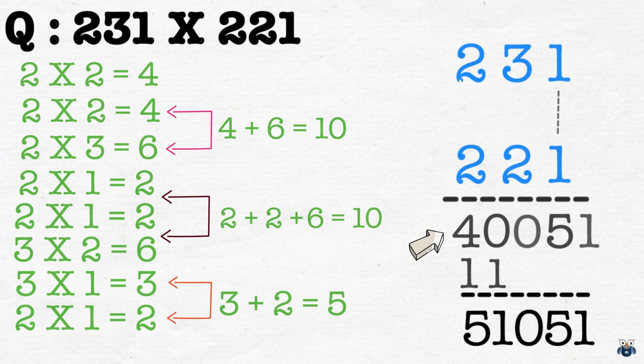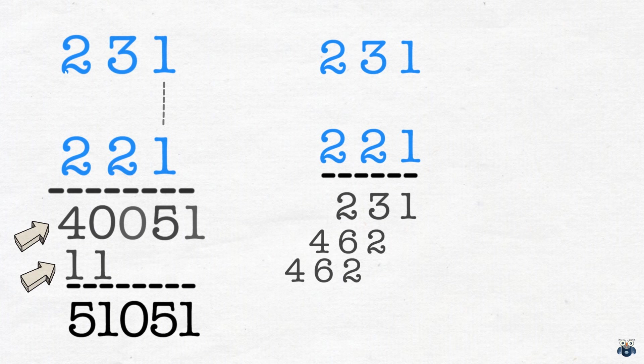Now some of you may have noted that we have two levels of results which we added to get our final answer. But if we use the conventional way, we would have three levels. So this brings us to the end of our session.